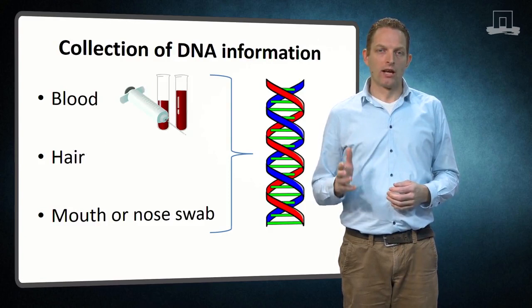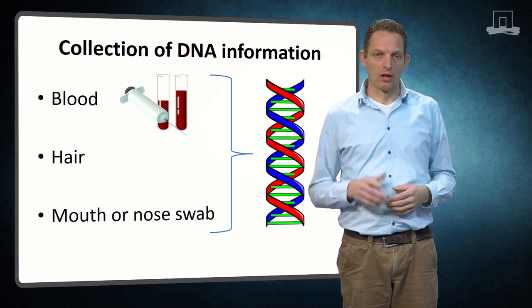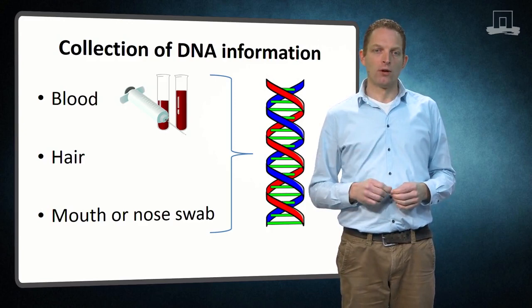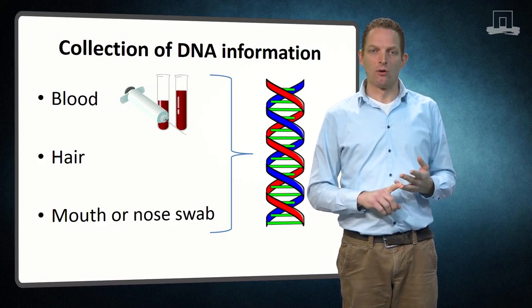Checking the pedigree for errors can be done using DNA information. This brings us to the last category of information source used in selection. Common ways to collect DNA information are blood, hair roots, and mouth or nose swabs.